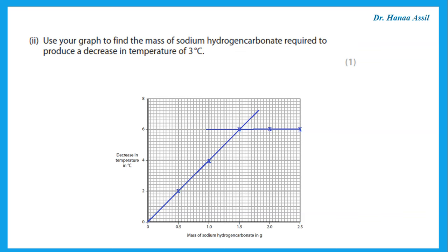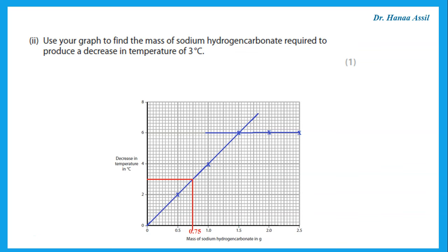Use your graph to find the mass of sodium hydrogen carbonate required to produce a decrease in temperature of 3 degrees Celsius. Coming from the y-axis at 3 degrees Celsius, go to the line and then go down — you will find this gives 0.75 grams. Please show on your graph how you obtained your answer.